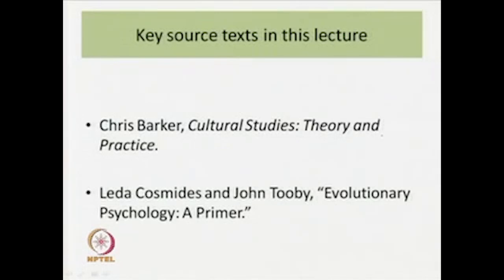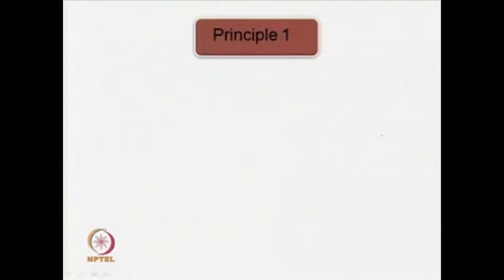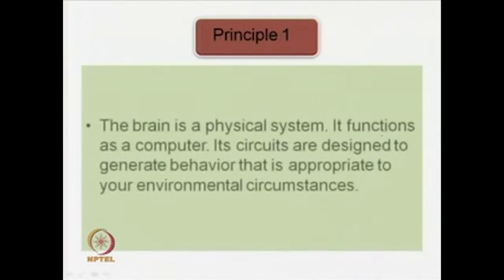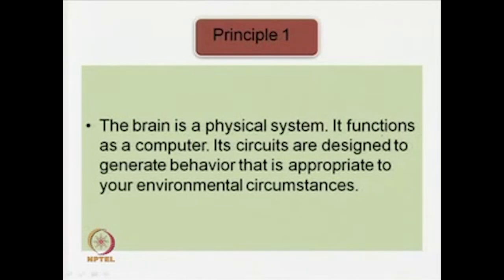Let us go to the key source texts in our lecture here. The key source texts today are Chris Barker's Cultural Studies: Theory and Practice and Leda Cosmides and John Tooby's Evolutionary Psychology Primer. We have already been through some of the formulations given in this domain, and in this lecture we will quickly move on to the principles of evolutionary psychology. Today's lecture is devoted mainly to the five principles of evolutionary psychology, as given to us by Leda Cosmides and John Tooby.